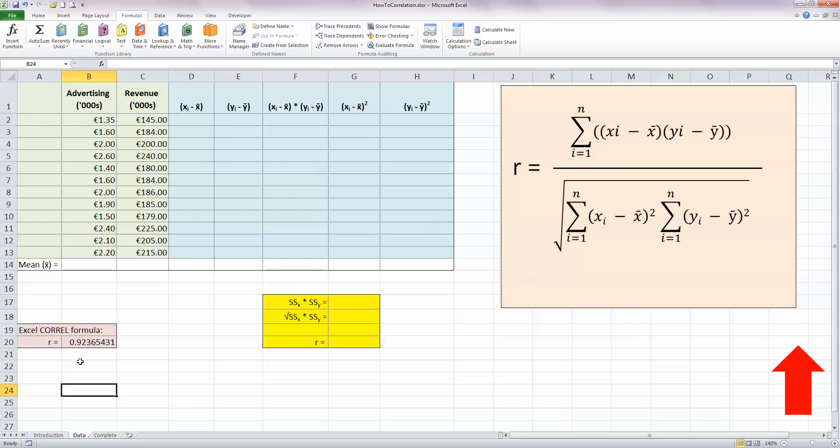And this gives me over here in cell B20 an R correlation coefficient value of 0.92365431. Now we could stop here, and we now have the correlation coefficient R, and because this number here is so high, it's plus 0.92, this is telling us straight away that there is a very strong positive correlation between advertising spend and revenue, and that correlation of course is a statistical correlation. Remember, correlation is not causation.